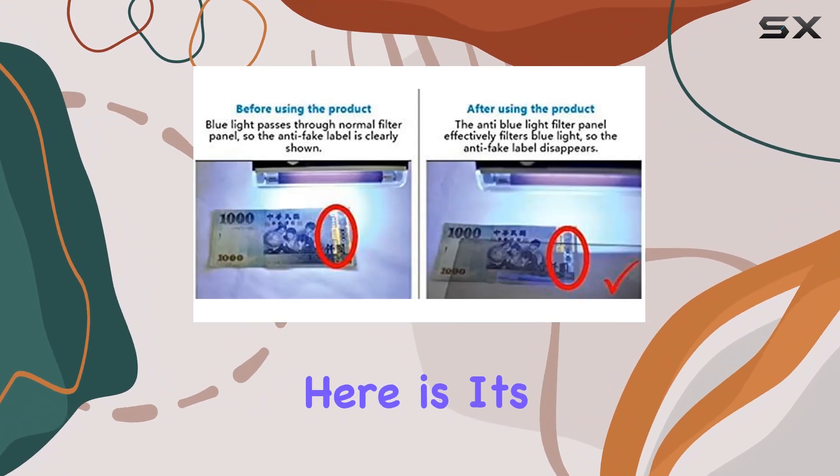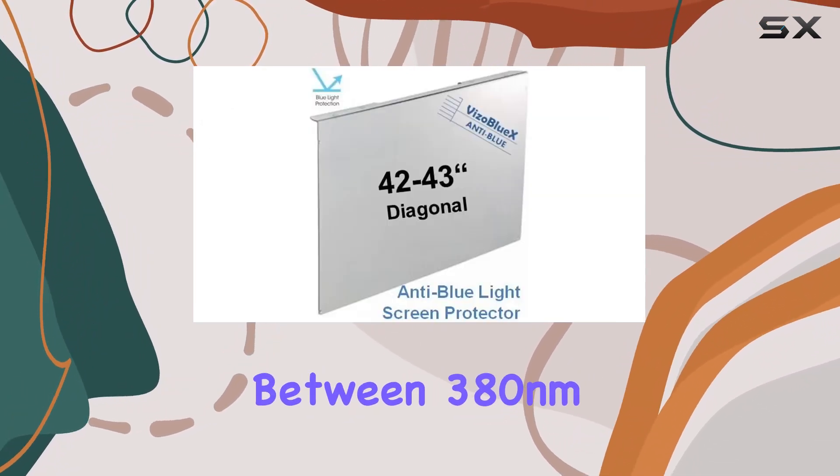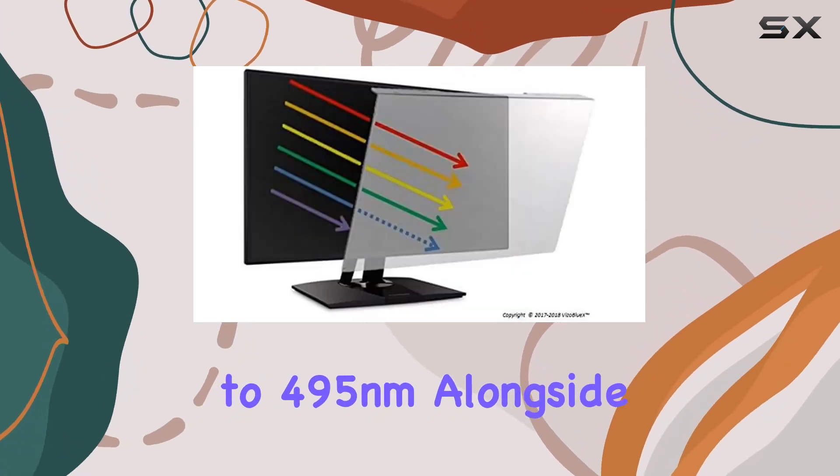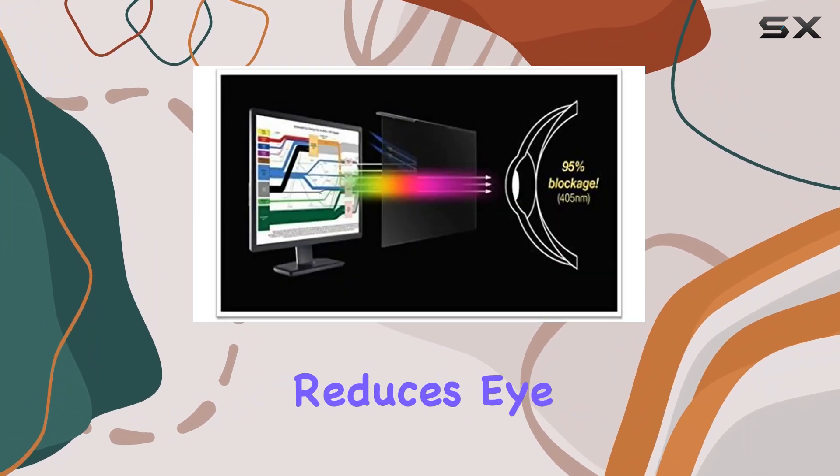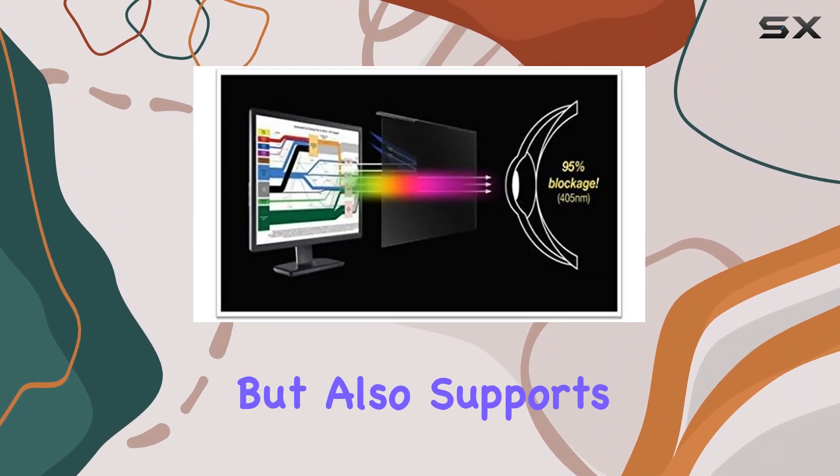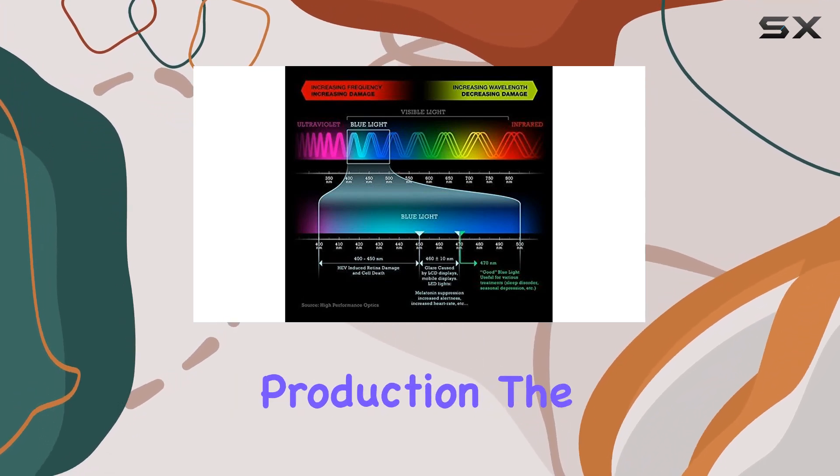The standout feature here is its ability to block blue light wavelengths between 380 nanometers to 495 nanometers, alongside providing full UV protection. This not only reduces eye strain and fatigue, but also supports better sleeping patterns by mitigating the disruptive effects of blue light on melatonin production.